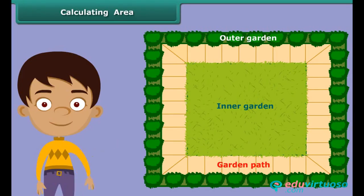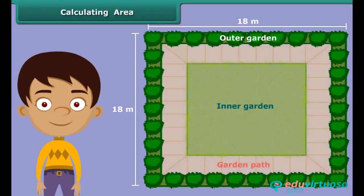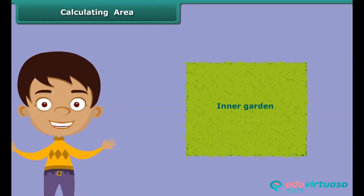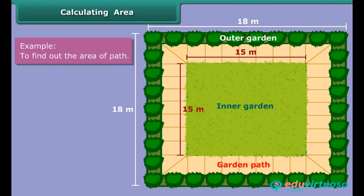Suppose there is a square garden of 18 meters. We want to make a provision for a path on all the four sides. The inner garden after the path is made should be of 15 meters. We want to find the area of the path.